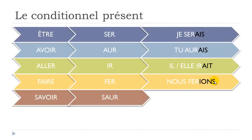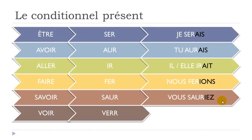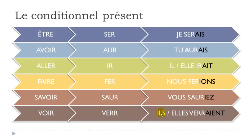Savoir will become 'saur' — vous sauriez. Voir will become 'ver' — il verrait, elle verrait. Let's review: être (to be) → je serais; avoir (to have) → tu aurais; aller (to go) → il irait, elle irait; faire (to do) → nous ferions; savoir (to know) → vous sauriez; voir (to see) → il verrait, elle verrait.